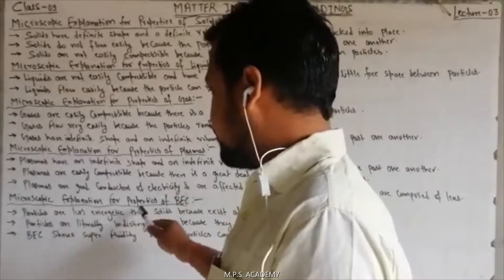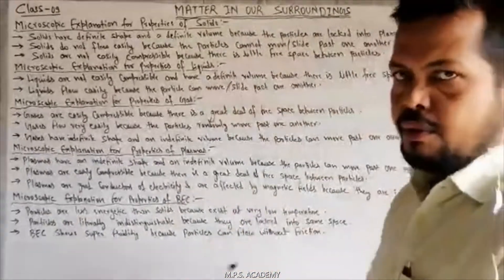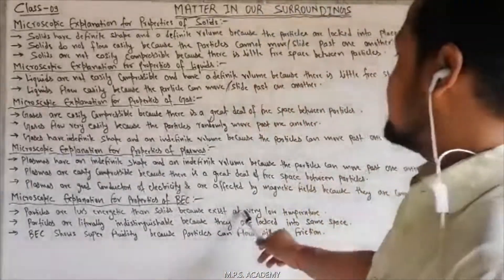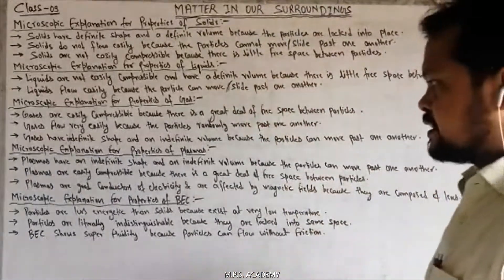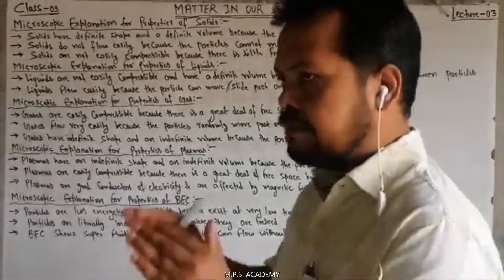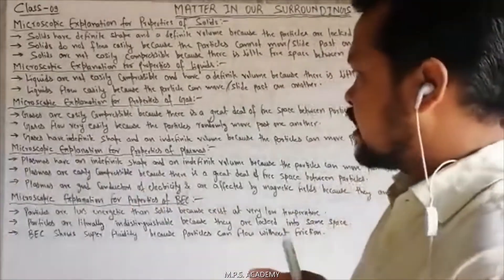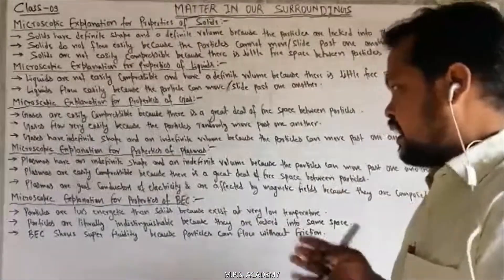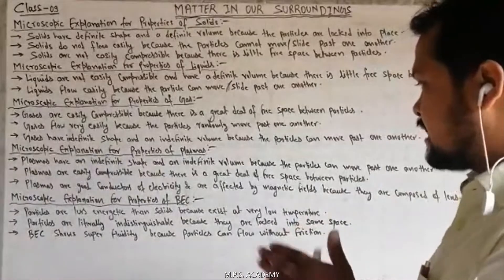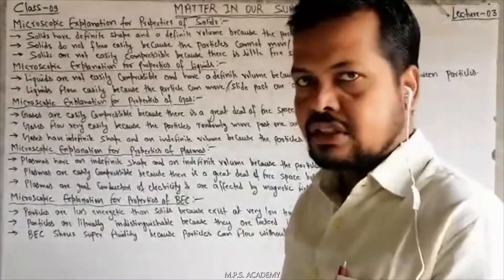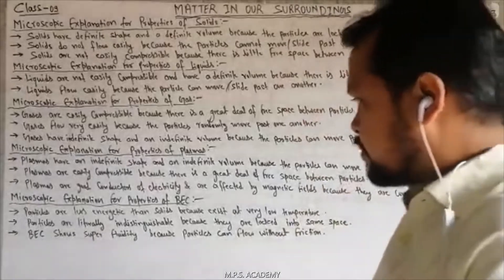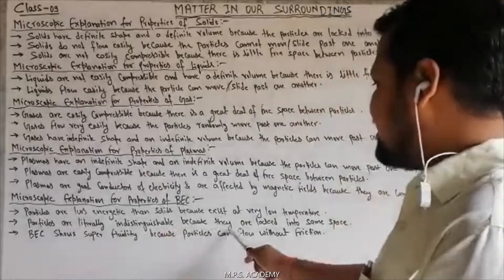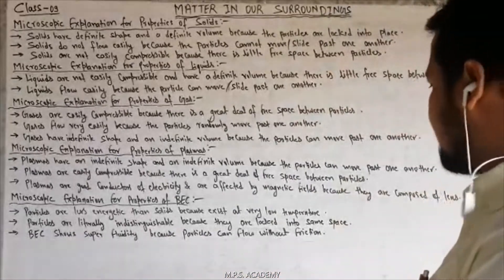Microscopic explanation for properties of BEC — Bose-Einstein condensate. Particles are less energetic than solid because they exist at a very low temperature. If we talk about all 5 states, the least energetic state is BEC because it exists at a very low temperature. The particles are literally at rest and are locked into the same space.